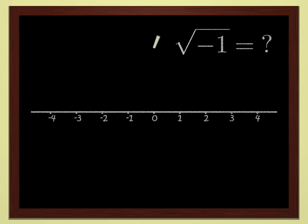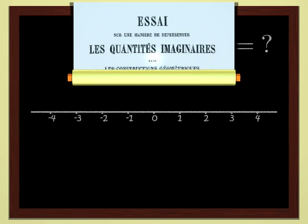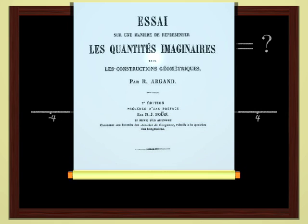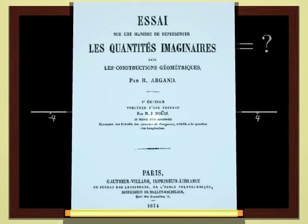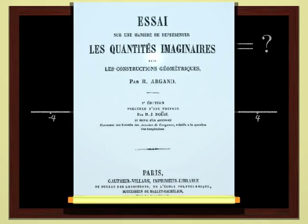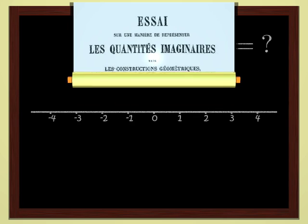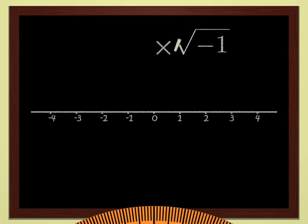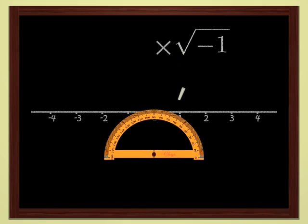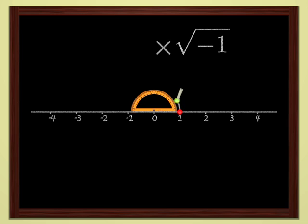But, of course, we are underestimating the inventiveness of mathematicians. At the beginning of the 19th century, Robert Argon had a really great idea. He said to himself, since multiplying by minus one is 180 degree rotation, its square root is a rotation by one half of 180 degrees, 90 degrees. If I do two quarter turns one after another, I end up doing a half turn. The square of a quarter turn is a half turn, hence minus one. It's easy when you know how.